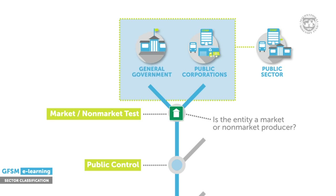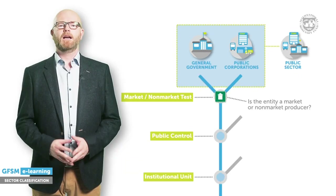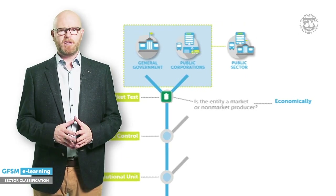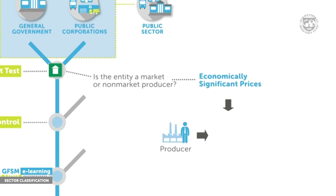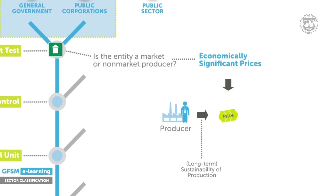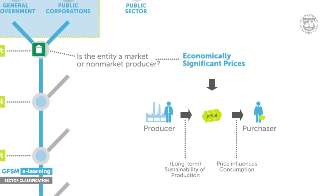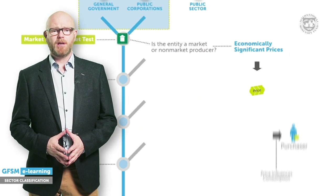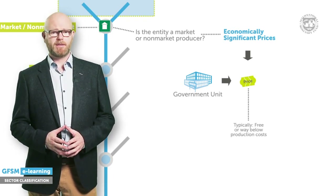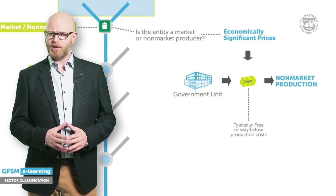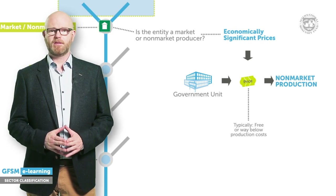The process of drawing this line is referred to as the market/non-market test. A central feature of market production is that prices charged for goods and services sold are considered economically significant. This means that producers will set and adjust prices at a level that allows them to sustain themselves over the long run, and purchasers may change their consumption decisions on the basis of price — the producer operates in a market whereby prices affect supply and demand. Government units most often offer their goods and services for free, or at prices substantially below the cost of delivering them, funded by taxes. This is a clear case of non-market production, because pricing does not affect the level of goods and services government will supply.